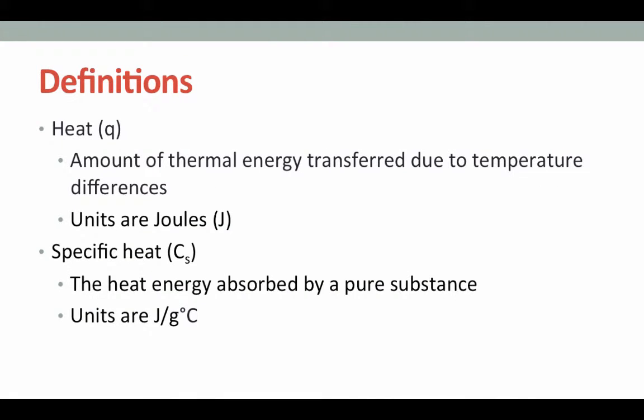There are a number of terms that we will learn today that may not be new to you, but have specific definitions when used to speak about thermal energy and the thermodynamics of chemical reactions. Heat is the amount of thermal energy that is transferred due to temperature differences into objects or solutions, and its units are joules, represented by a capital J. Specific heat is the heat energy absorbed by a pure substance, measuring its ability to insulate against or transfer heat. The units of specific heat are joules per gram degrees Celsius.